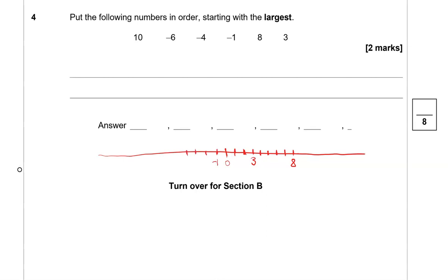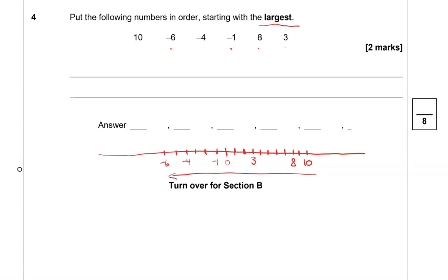Let's see, we've got 10 here, so 10 will be placed here. We've got -6, -4, -1, 8 and 3. So we're going to write them in order starting with the largest. So we've got 10 as the largest number, then we have 8, we've got 3, and then we have -1, -4 and -6.